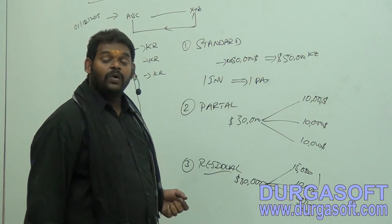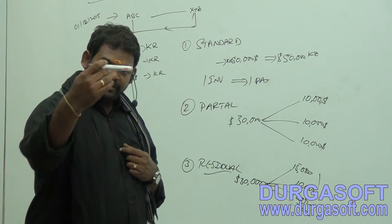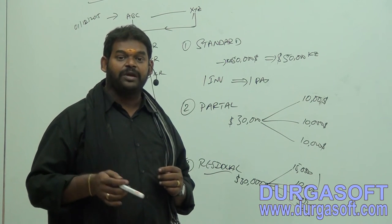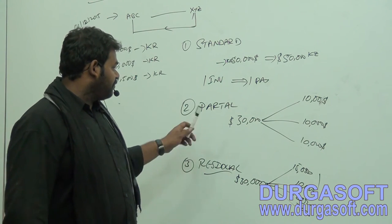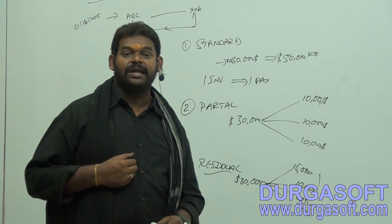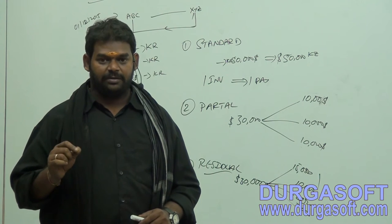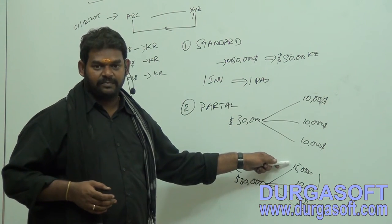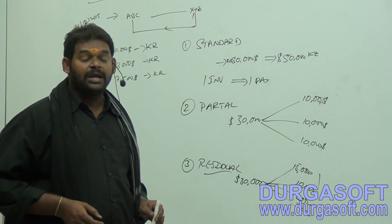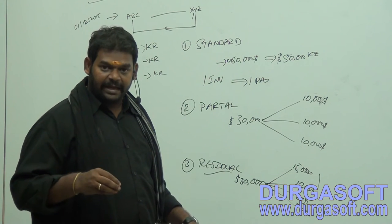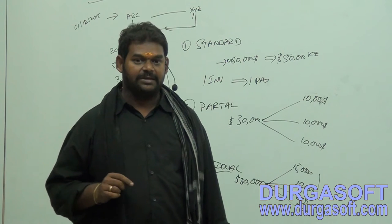What are the differences between Standard, Partial, and Residual? In Standard, one invoice is cleared against one payment document — a full payment at once. In Partial, one invoice can be cleared in multiple parts but all the payment parts must be equal — like easy EMIs. For example, a $30,000 invoice cleared in three equal parts of $10,000 each.